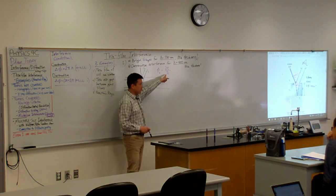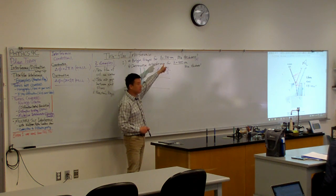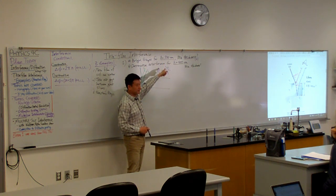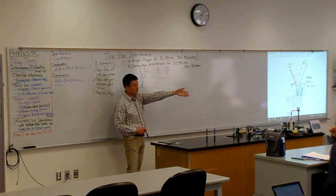Something is wrong with this lambda that I'm going to plug in. Because I'm going to plug in lambda of 500 nanometers, and that's not quite right. Does it change? Why does it change?